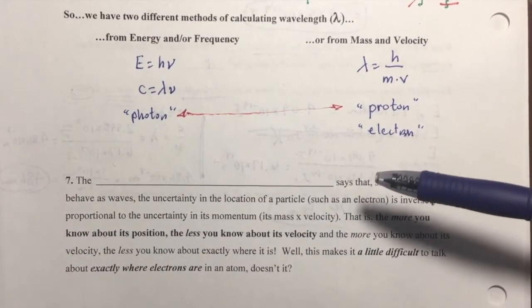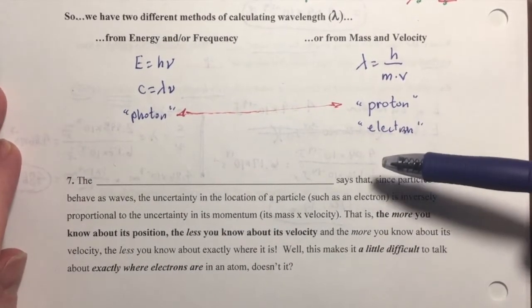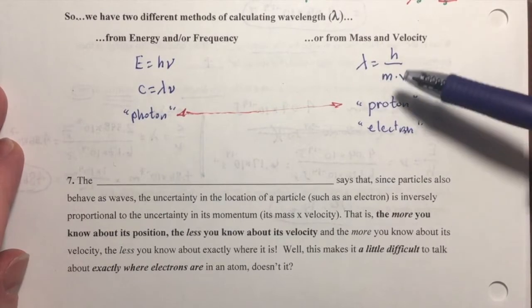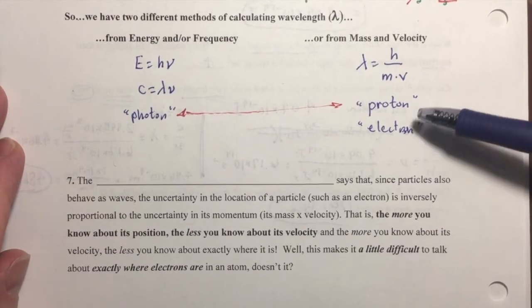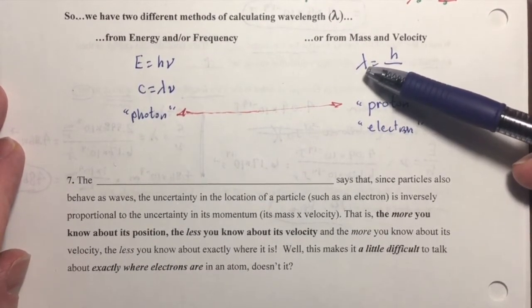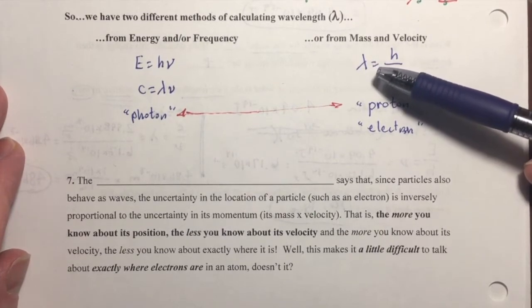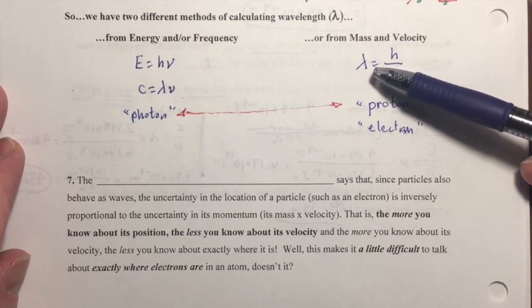Well, before we fill in that gap, I've got to give you some background. One of the challenges of dealing with the wave particle duality of an electron is that on the quantum level, if you can consider a particle as being a wave, then it's hard to know exactly where that wave is at any given moment in time.